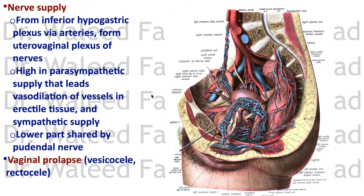The nerve supply is from the inferior hypogastric plexus on the lateral pelvic wall, reaching the vaginal arteries via the utero-vaginal plexus of nerves. The parasympathetic supply leads to vasodilation of vessels in all erectile tissue in the area, and the lower part is also supplied by the pudendal nerve.